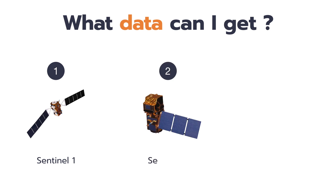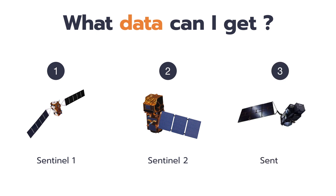Secondly, data from Sentinel-2. Sentinel-2 is a high-resolution multispectral imaging mission, supporting land monitoring such as vegetation, soil, and water. Lastly, data from Sentinel-3. Sentinel-3 can monitor sea and surface temperature.